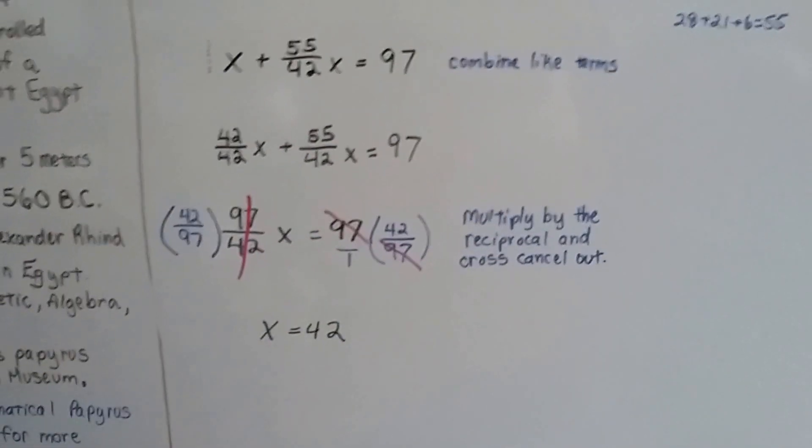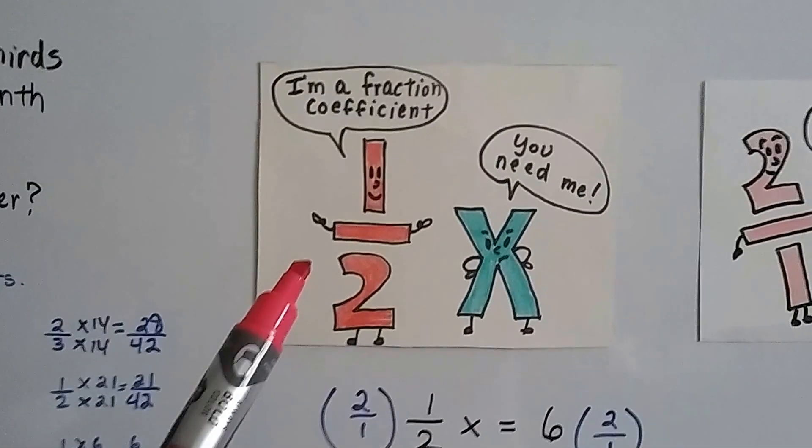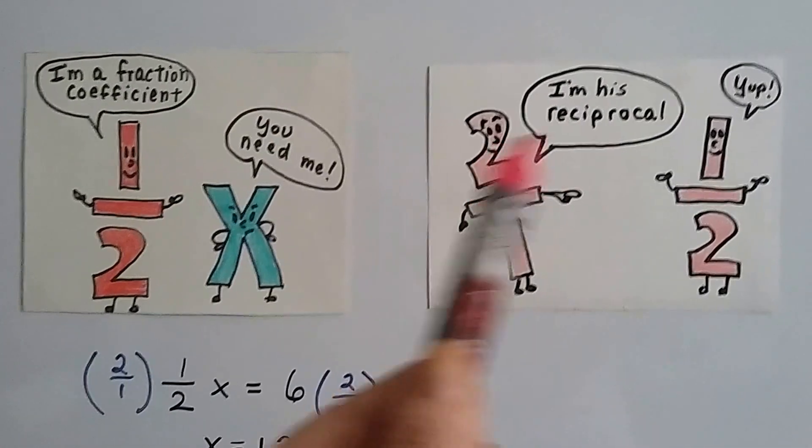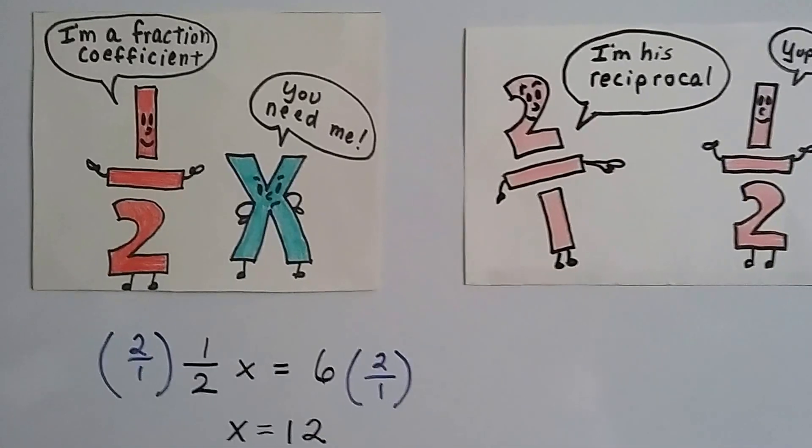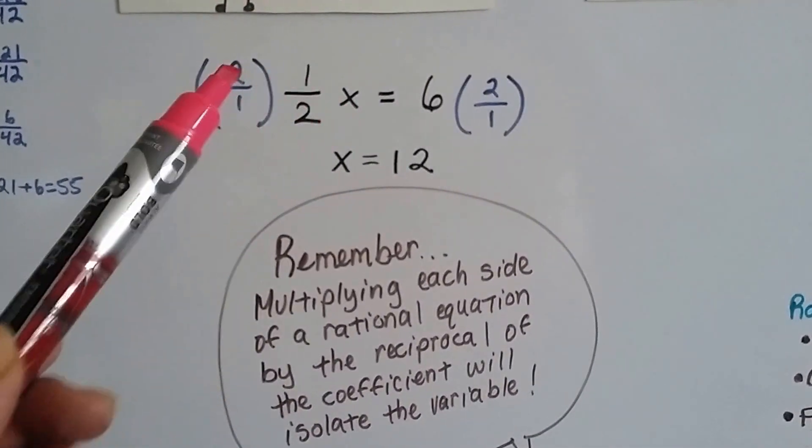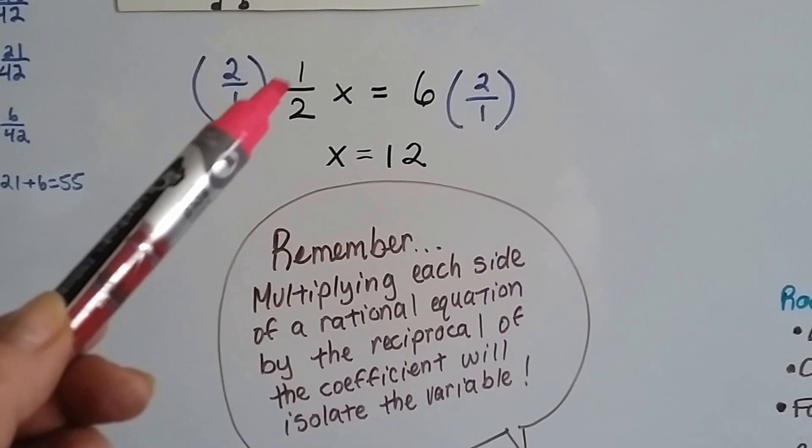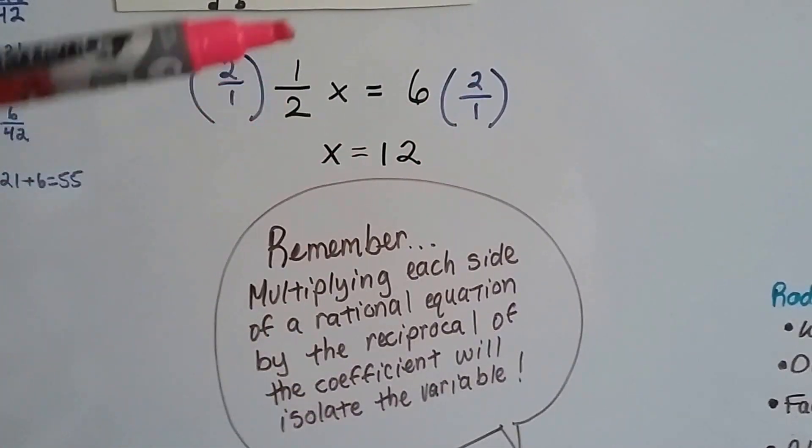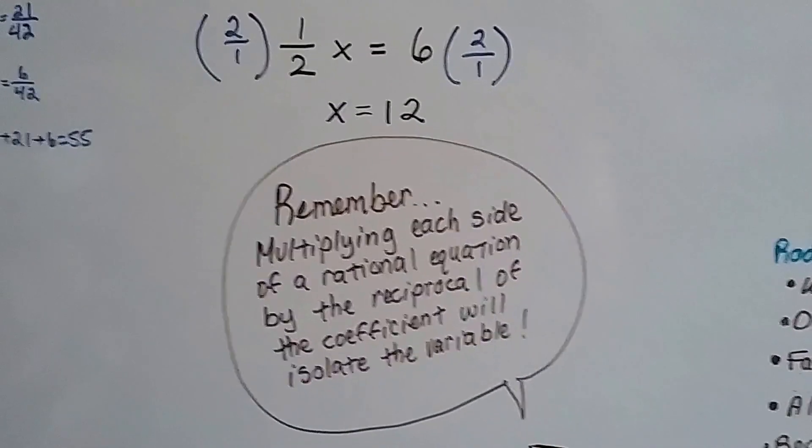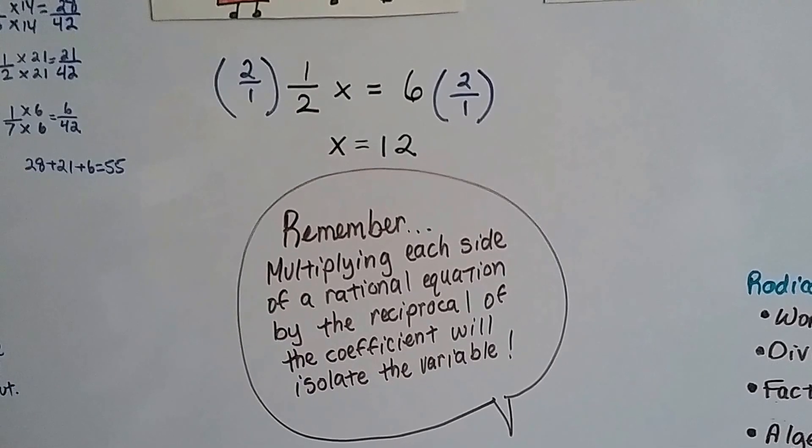See? Canceling out really helps, doesn't it? And just remember that a coefficient, or a fraction coefficient, is whatever is in front of that variable. And the reciprocal is the upside-down version of that fraction, or that rational expression. And all we have to do to isolate a variable is to multiply both sides by the reciprocal of that rational number, that fraction. And that way we end up with 2 over 2, which is a 1, is equal to 12. See? We multiply each side of the rational equation by the reciprocal of that coefficient, and it isolates the variable.